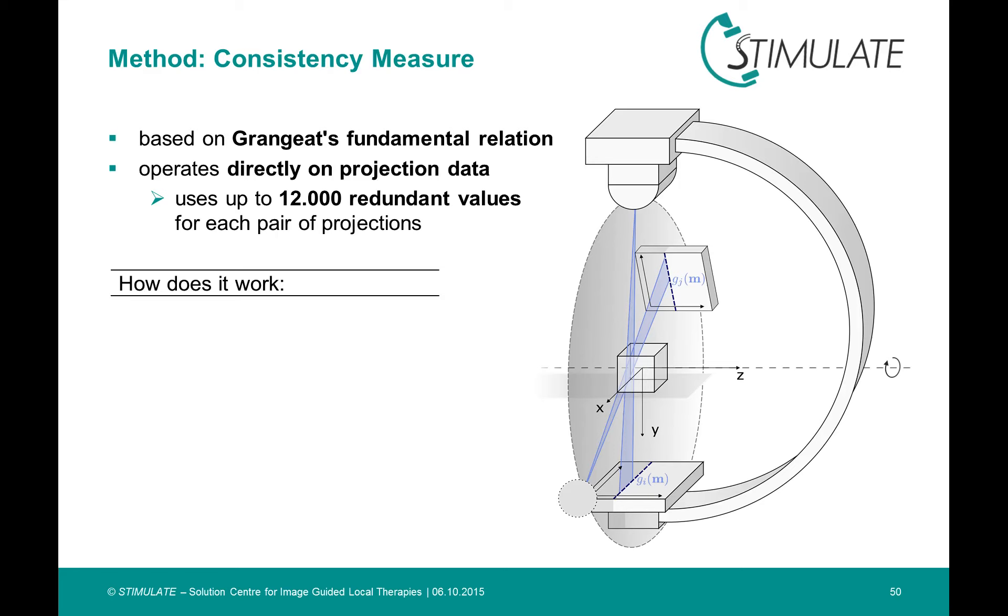So how does it work? Well, we want to find redundant information in our projection images. This information is given by a so-called intermediate function, which is basically a linear transformation of all projections.